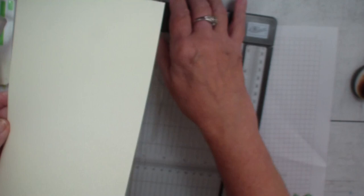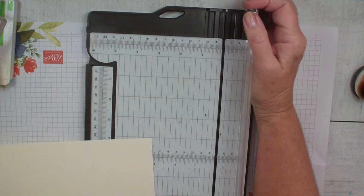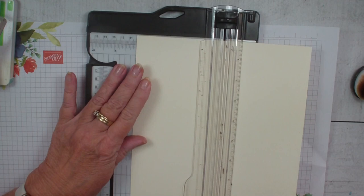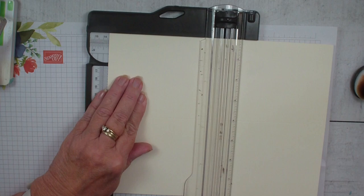Now, I have a piece of very vanilla cardstock. This measures eight inches by ten and a half, and I am going to score at the four-inch mark and the five-and-a-quarter.